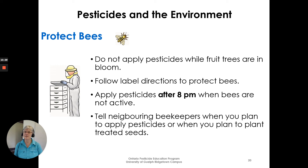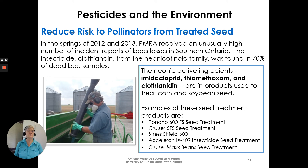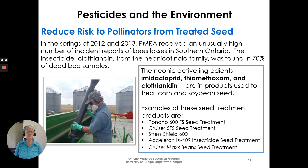Protect bees: do not apply pesticides when fruit trees are in bloom. Follow label directions to protect bees. Apply pesticides after 8 p.m. when bees are not active. Tell neighboring beekeepers when you plan to apply pesticides or plant treated seeds. In the springs of 2012 and 2013, the PMRA received an unusually high number of incident reports of bee losses in Ontario. The insecticide clothianidin from the neonicotinoid family was found in 70% of dead bee samples. The neonicotinoid active ingredients imidacloprid, thiamethoxam, and clothianidin are in products used to treat corn and soybean seed, such as Poncho, Cruiser Stress Shield, Acylaron, and Cruiser Maxx bean seed treatment.